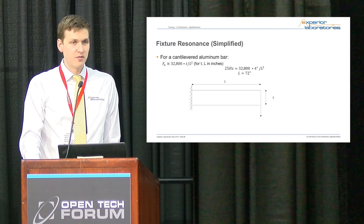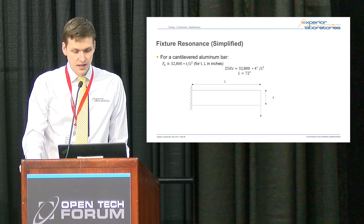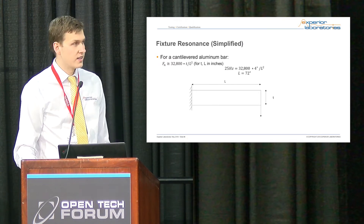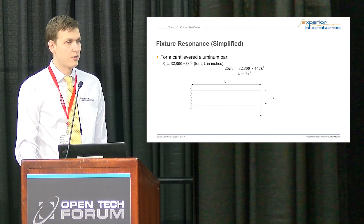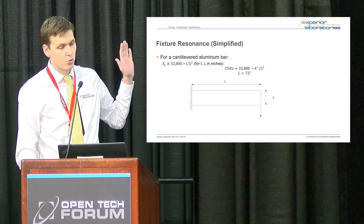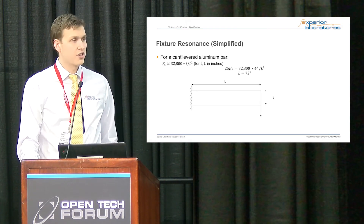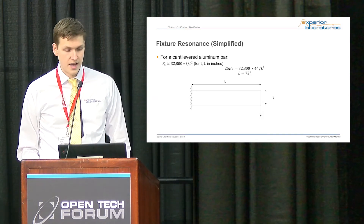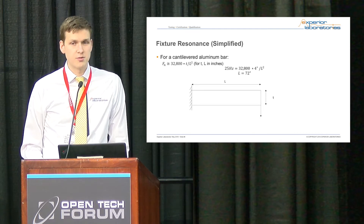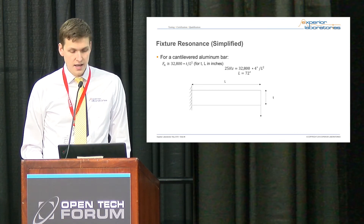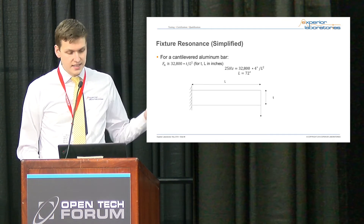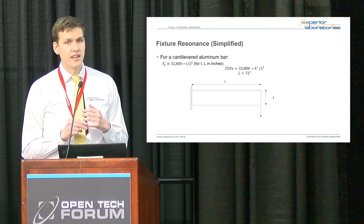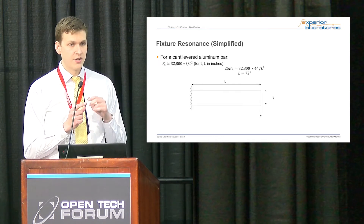So how do we get past that? I'm going to talk about fixture resonance. If you have a cantilevered aluminum bar, this formula — with constants for aluminum supported on one end — gives the natural frequency of the beam, specifically its fundamental natural frequency, also called the resonant frequency. When you put in a small amount of vibration at that frequency, you get a much larger output. If you've ever done a resonance search on a DUT, you sweep through frequencies looking for spikes — those are the resonant frequencies.